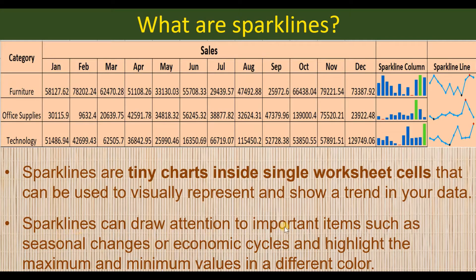Sparklines can draw attention to important items such as seasonal changes or economic cycles, and highlight the maximum and minimum values in a different color. We can see seasonal variations and understand economic cycles, whether there has been growth shown by higher sales or recession represented by lower sales.